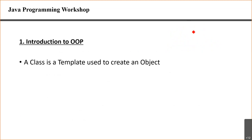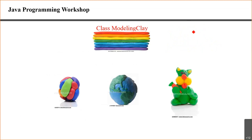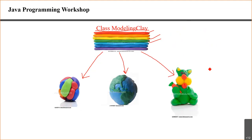A class is a template, a blueprint to create an object. For example, we have a class like modeling clay, and using this class we can create different kinds of objects — using the red clay, the green clay, the yellow clay. The object can go to the blueprint and copy whichever attributes it wants to serve its purpose. This new paradigm is called object-oriented programming, and its benefits include the class concept, inheritance for reusability of code, and polymorphism.